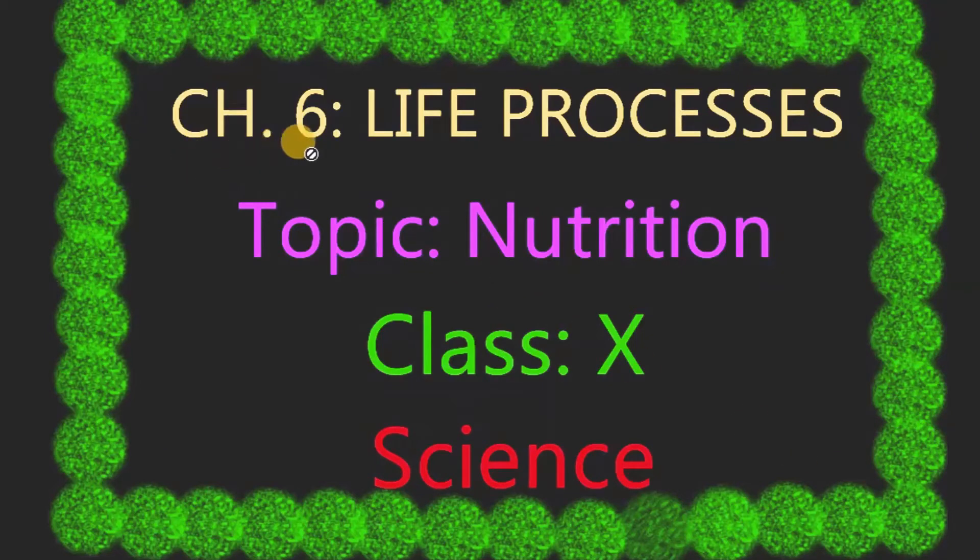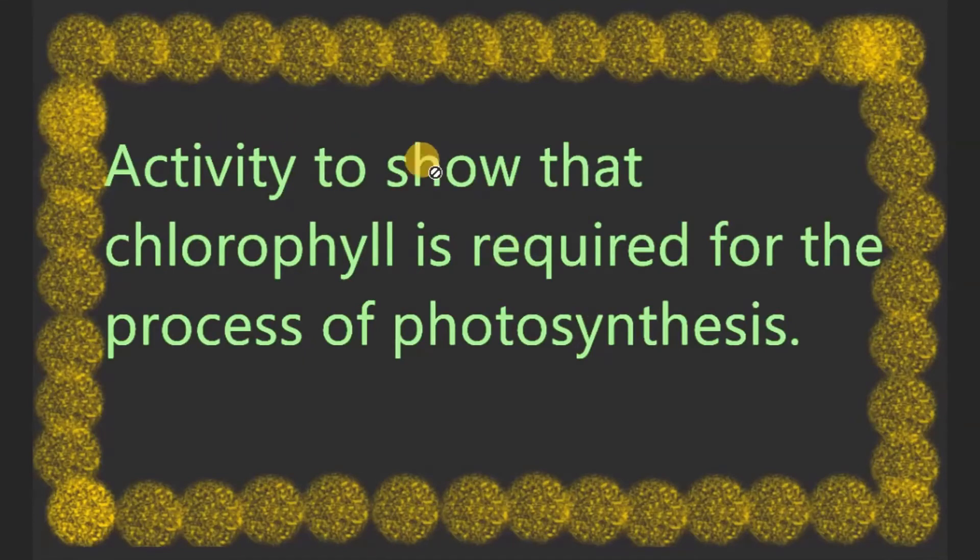Hello students. We are doing Chapter 6, Life Processes. Our topic is Nutrition, and today we are going to do two activities included in the photosynthesis part of this chapter. The first activity is to show that chlorophyll is required for the process of photosynthesis.